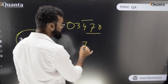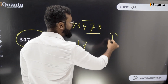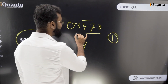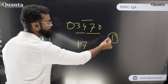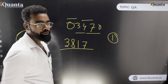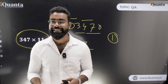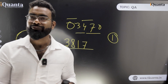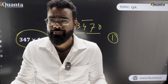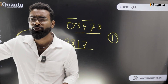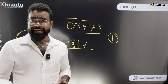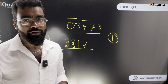Next, 4 plus 7 is 11 — write 1 and carry 1. Next, 3 plus 4 plus 1 carry is 8. Next, 3 plus 0 is 3. Your answer is 3817. Whenever there is a carry, just add it into the next position, same as in regular multiplication. This is the multiplication technique for 11.